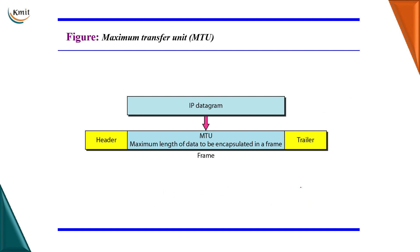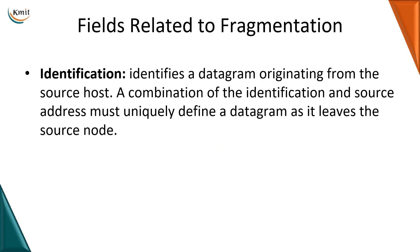The IP datagram at the network layer is encapsulated into a frame at the data link layer, and there is an MTU according to which we divide the IP datagram. The identification field identifies a datagram originating from the source host, so all fragments of the same datagram share this identifier.